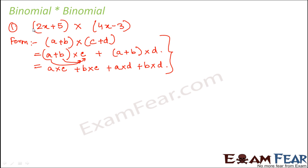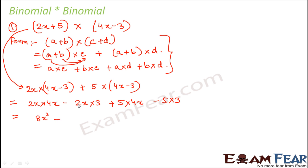So applying this logic, let us solve this expression: 2x × (4x - 3) plus 5 × (4x - 3). This can be further written as 2x × 4x minus 2x × 3 plus 5 × 4x minus 5 × 3. So 2 × 4 is 8, x × x is x², 3 × 2 is 6x, 5 × 4 is 20x, and 5 × 3 is 15.